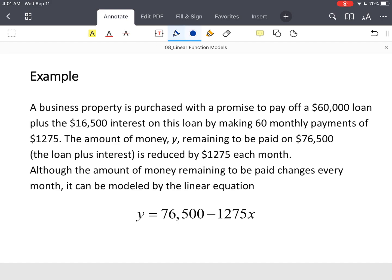So remember, highlight your terms. The loan amount, or your initial value, is $76,500. You're reducing that loan every month by $1,275.